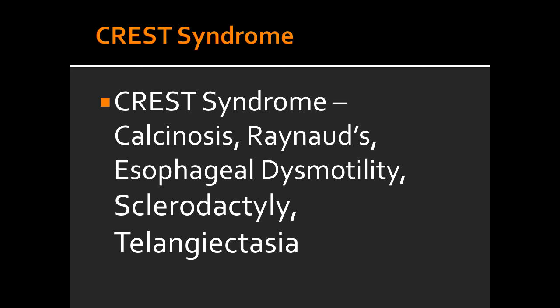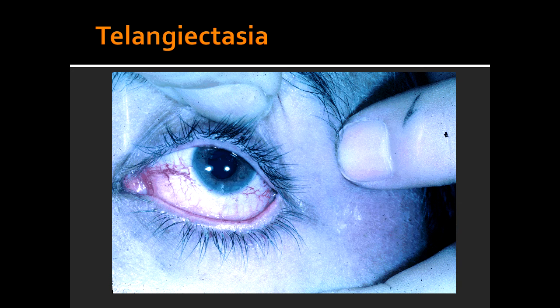What is sclerodactyly? Sclerodactyly is a localized thickening of the skin of the fingers and toes. What is telangiectasia? Telangiectasia is a condition in which there are small dilated blood vessels near the surface of the skin or the mucous membrane.